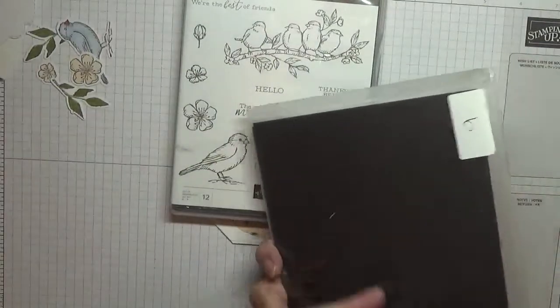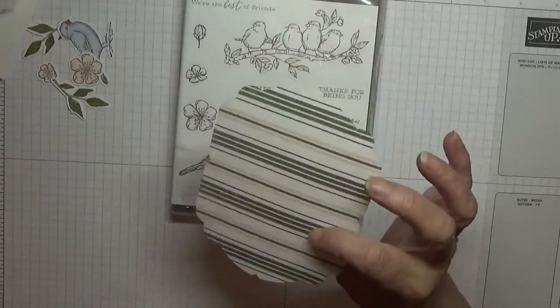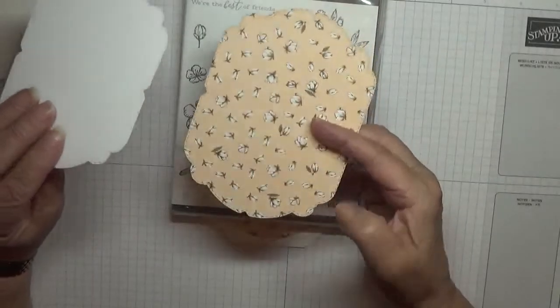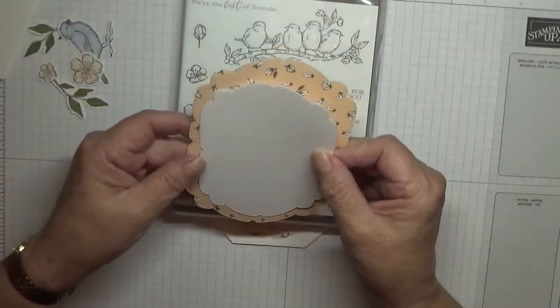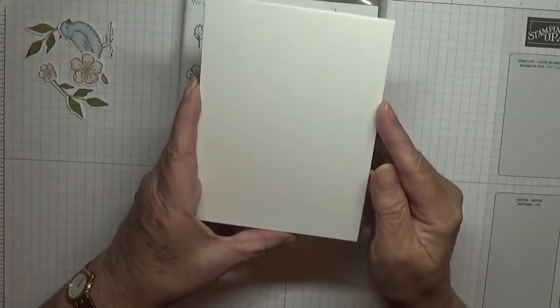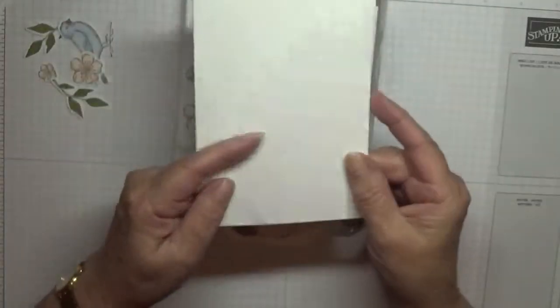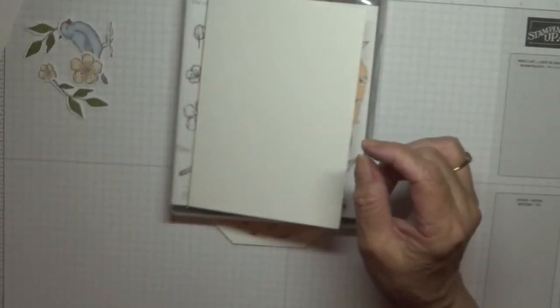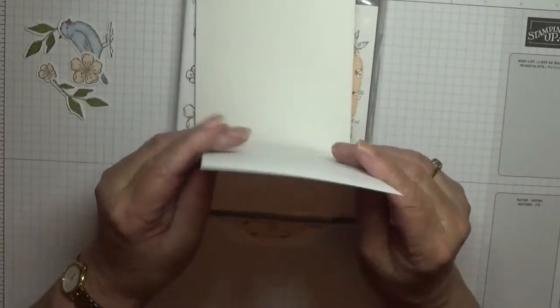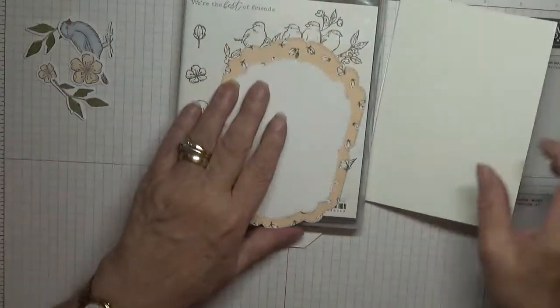The paper I've used is from Good Morning Magnolia from last season. I've got a white card base of eight and a quarter by five and seven eighths, scored at four and one eighth, folded in half and burnished. And I have two pieces of white cardstock at five and five eighths by three and seven eighths.